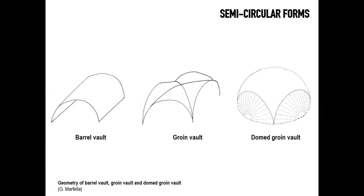We spoke already about the Romans and their ability to build vaults. I'd like to remind you of the geometrical principles that allowed vault construction. The material was Roman concrete — Opus Cementition — a forerunner of modern concrete. The geometrical device was the semicircular arch, which can stand alone, be extruded along one direction to become a barrel vault, or two arches oriented orthogonally and extruded in both directions generate what is known as the groin vault.